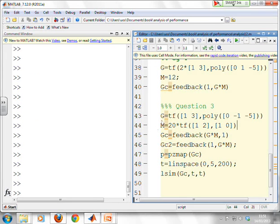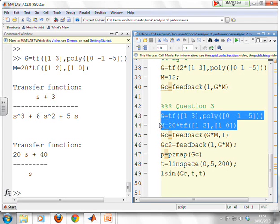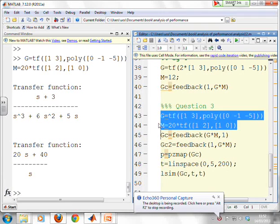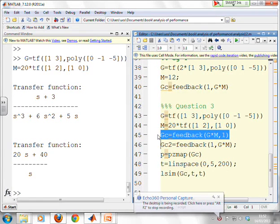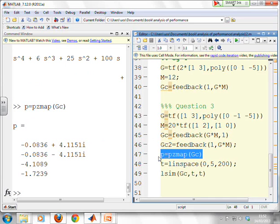So here's my MATLAB window. First, I'm going to enter this G and this M. There they are. G s+3 over s cubed plus 6s squared plus 5s and M 20s+40 over s. Now I'm going to calculate the closed loop transfer function from the target to the output. There it is. And now I'm going to look at the closed loop poles. And what do you notice? Closed loop poles minus 0.08 plus minus 4i. So a very small real part, very large imaginary part. I'm expecting slow decay, lots of oscillation.